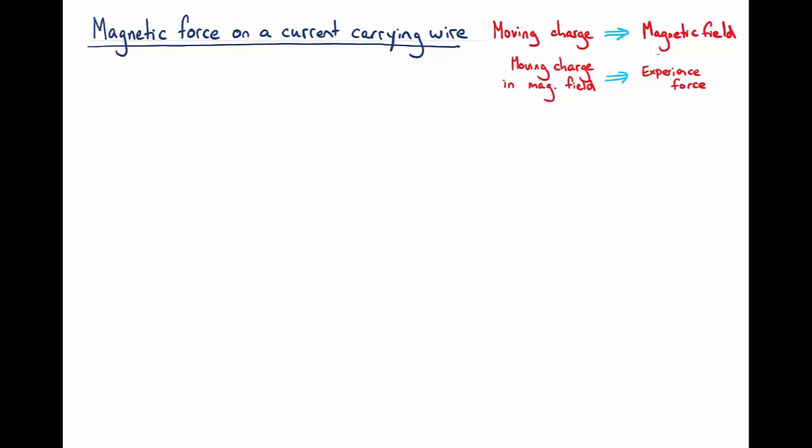So if we build on that a bit more, if a moving charge in a magnetic field experiences a force, then if we put a wire which is carrying a current, so we have lots of electrons moving in that wire, then that wire as a whole will experience a force. Now let's have a look at that in a bit more detail.